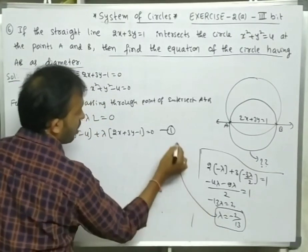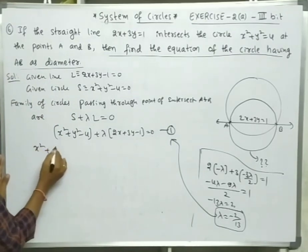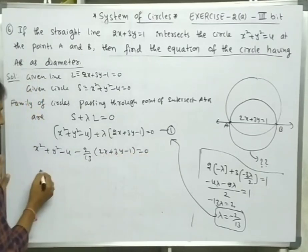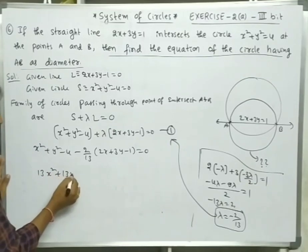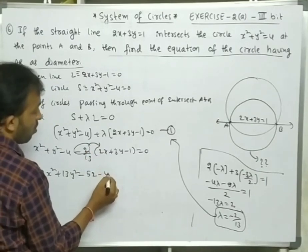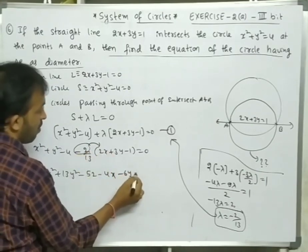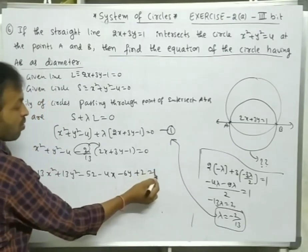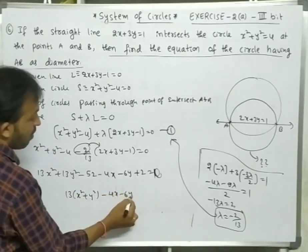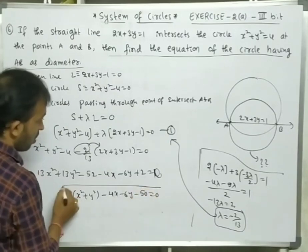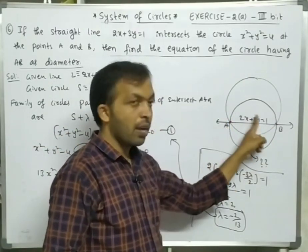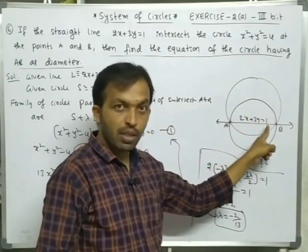Substituting λ = −2/13 into equation 1: x² + y² − 4 − (2/13)(2x + 3y − 1) = 0. Multiplying through by 13: 13x² + 13y² − 52 − 4x − 6y + 2 = 0. Finally: 13(x² + y²) − 4x − 6y − 50 = 0 is the equation of the required circle passing through A and B with AB as diameter.